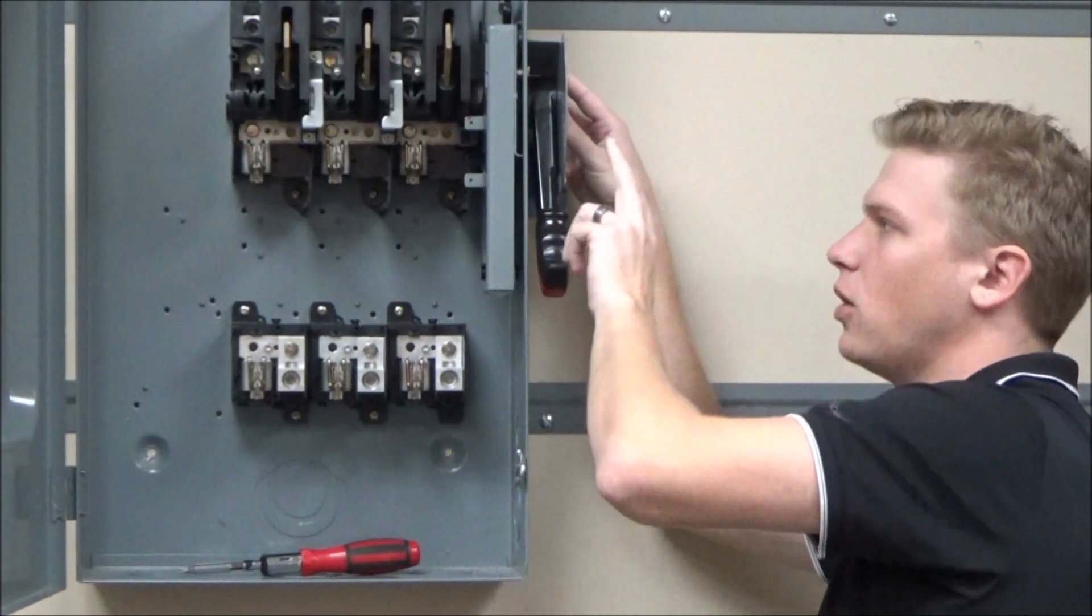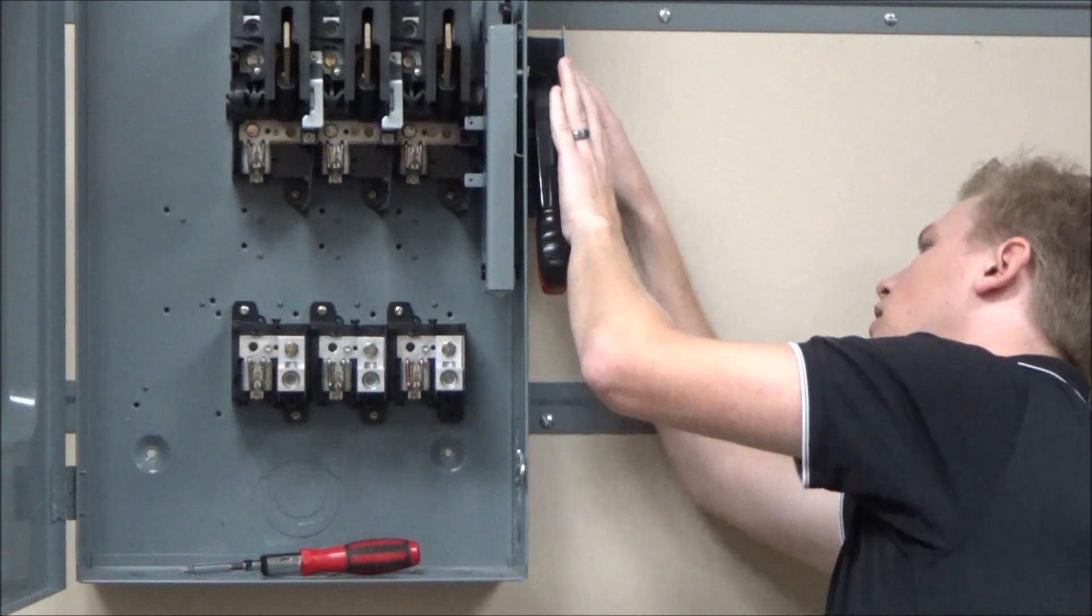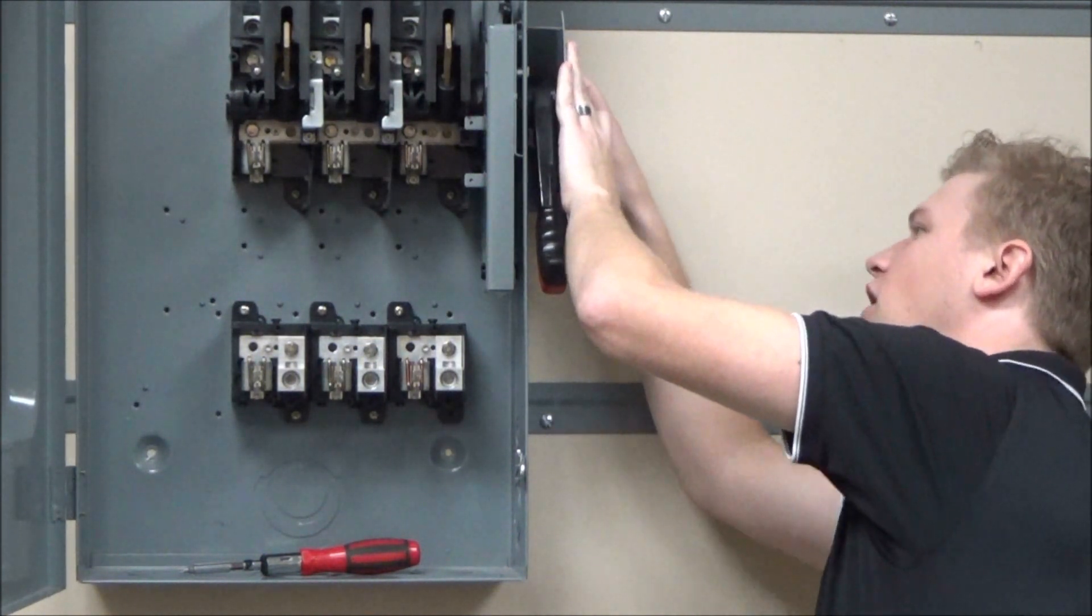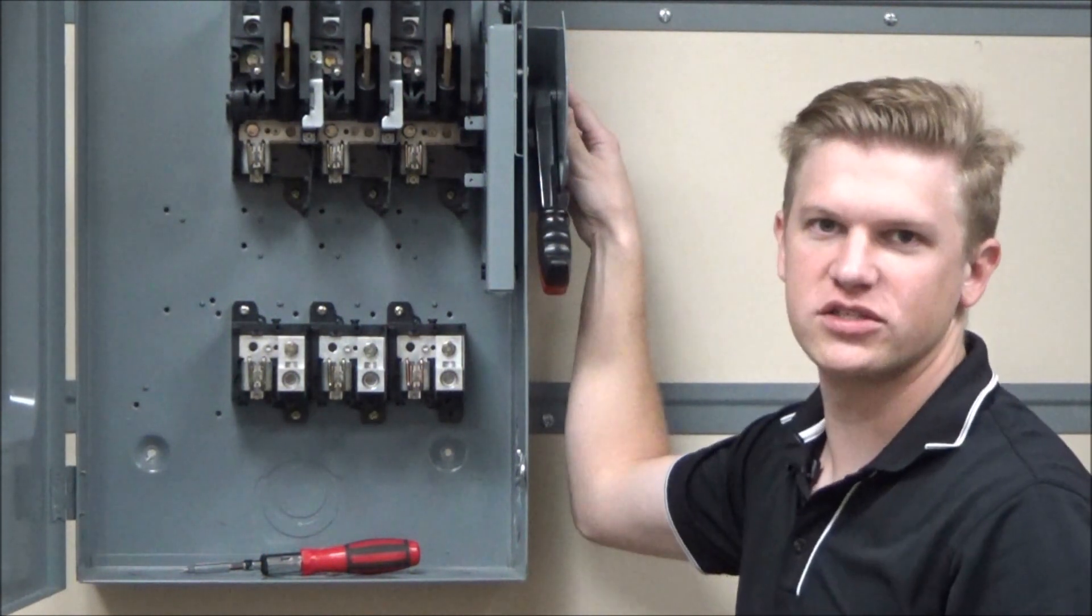Then line the two holes on the lock plate up with the holes on the safety switch and reinstall the screws.